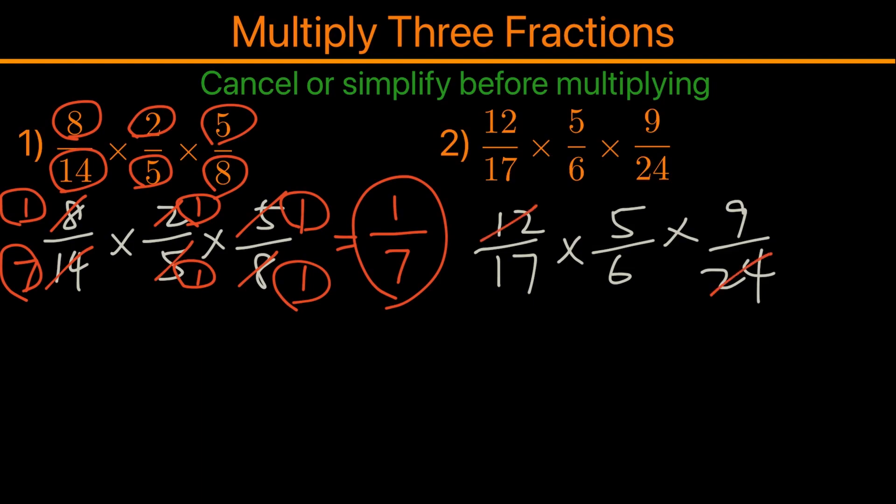Also, 9 and 6 are both divisible by 3—9 becomes 3 and 6 becomes 2. That looks like all we can simplify.